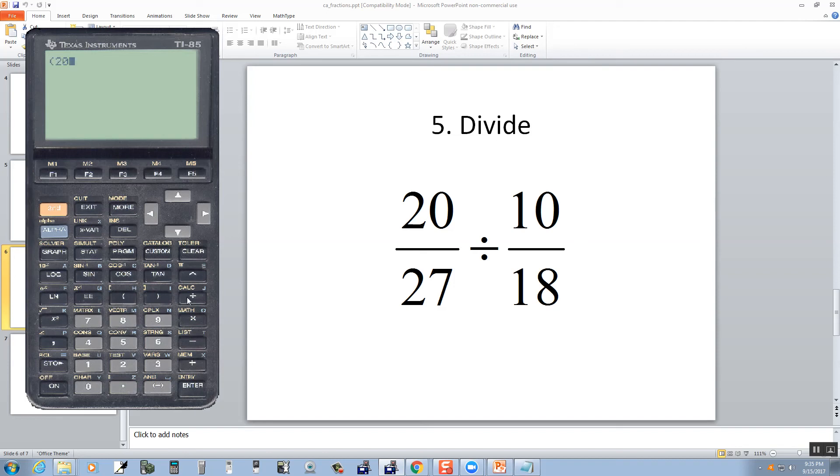So I'll do a beginning parentheses, 20, divided by 27. Closed parentheses, divided by beginning parentheses, 10 divided by 18. Closing parentheses, then enter.